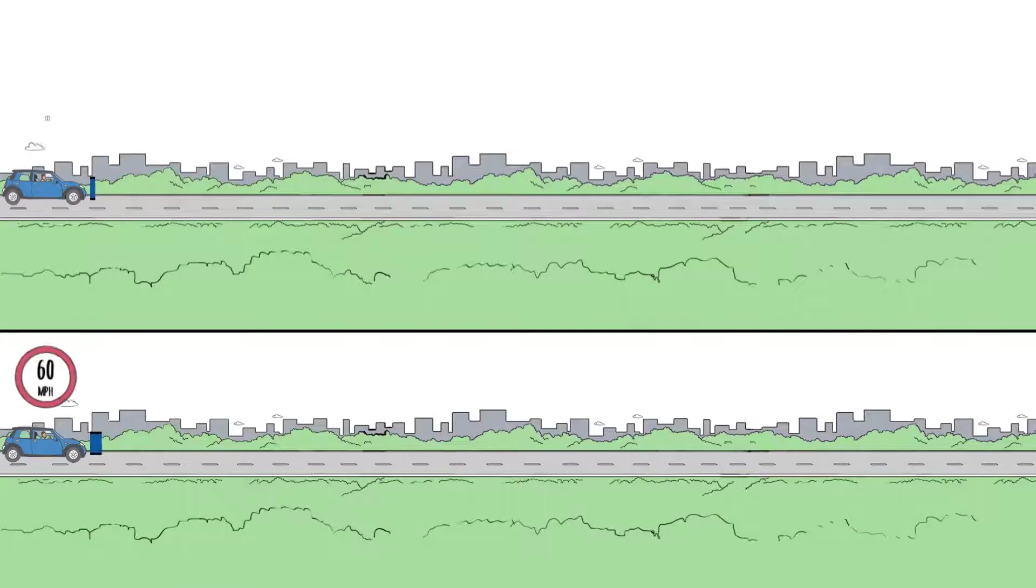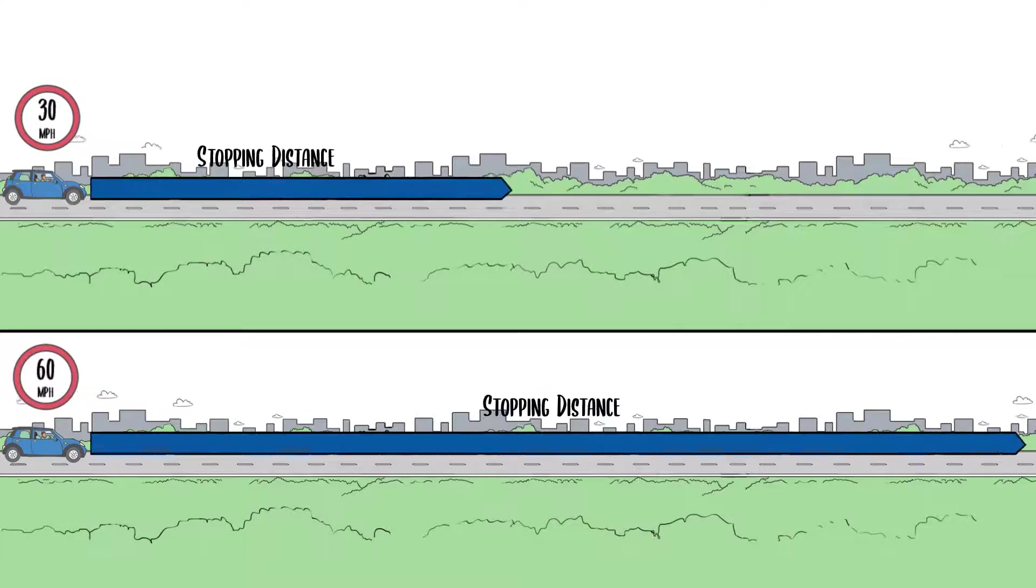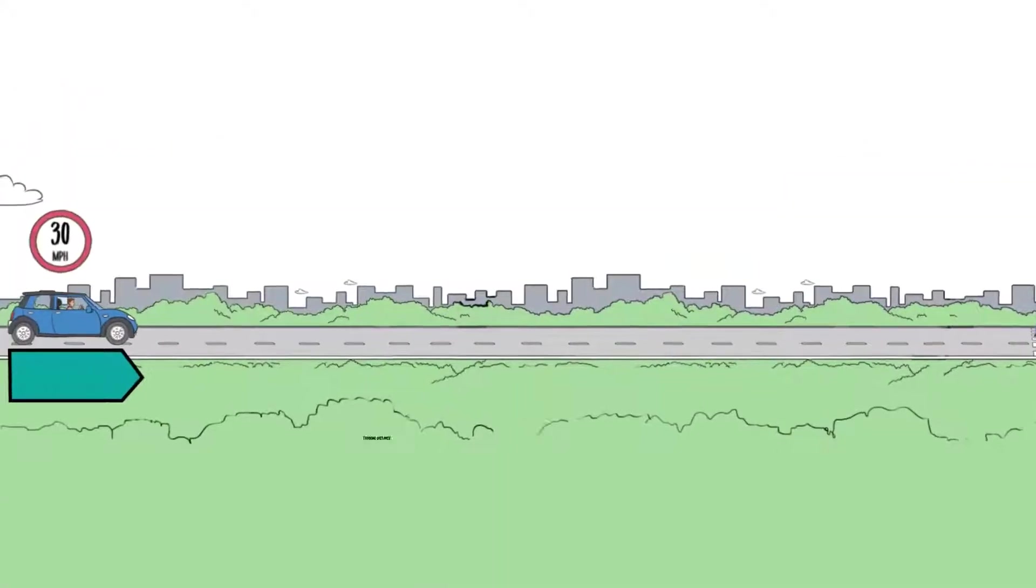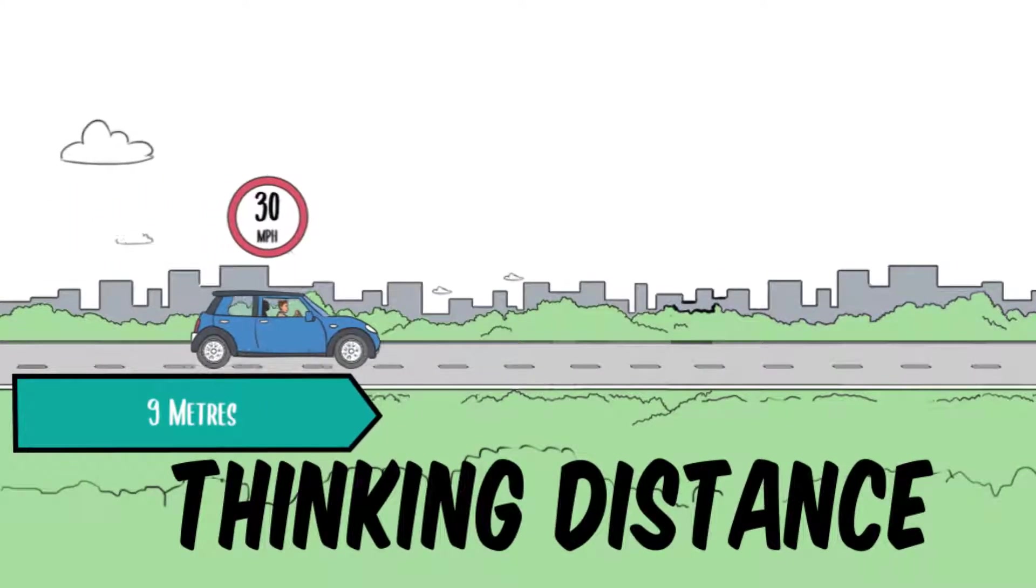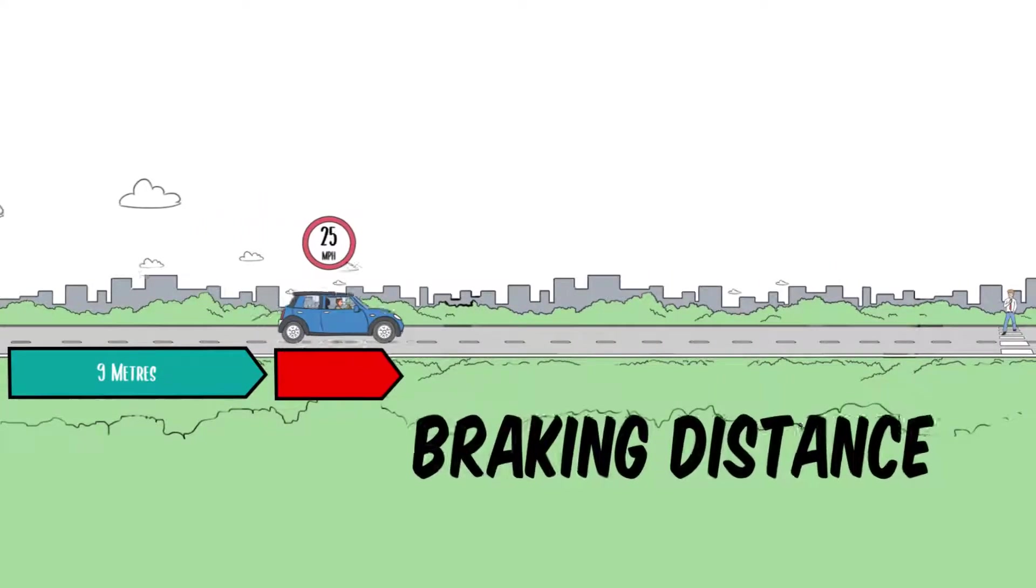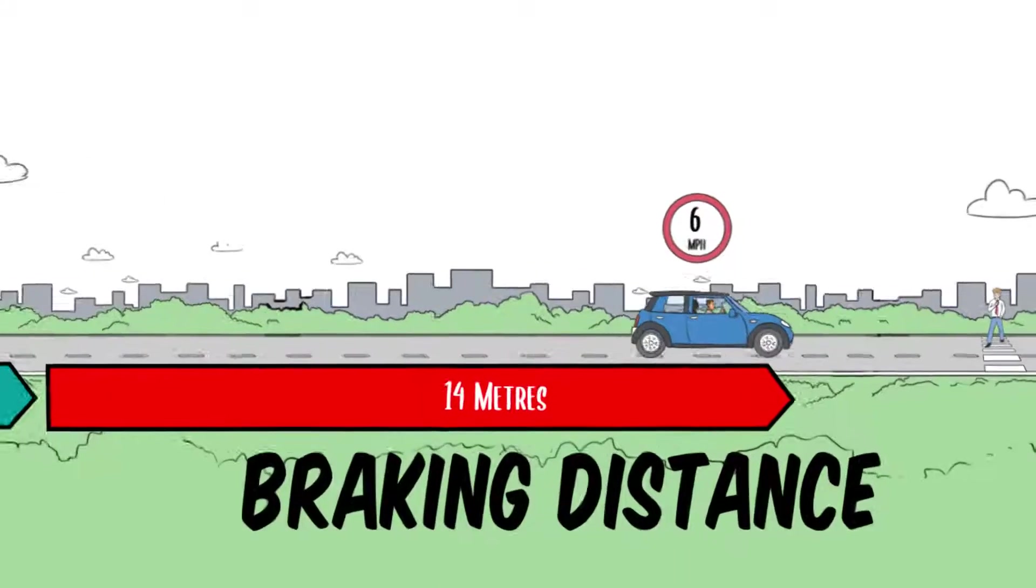The distance from the point where you first saw the hazard to the point where your vehicle comes to a standstill is your stopping distance. Stopping distance is made up of thinking distance, the distance you cover in the time between seeing a hazard and applying the brakes, and braking distance, the minimum distance required to bring your vehicle to a standstill.